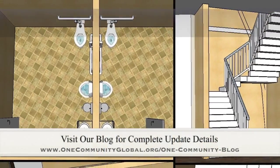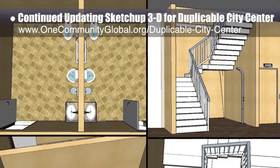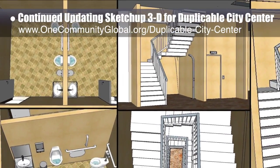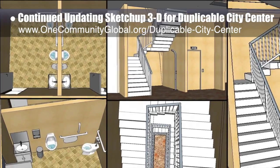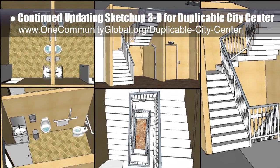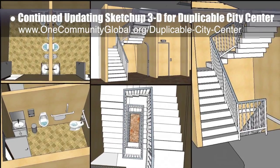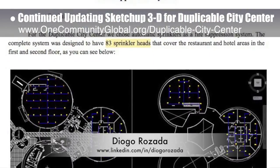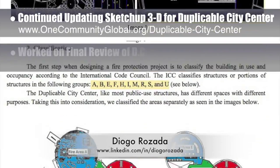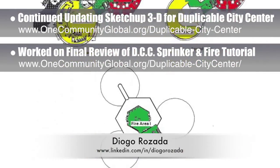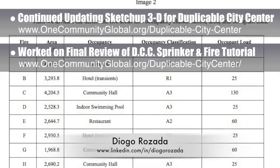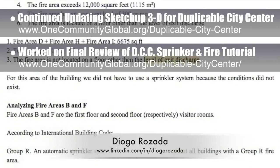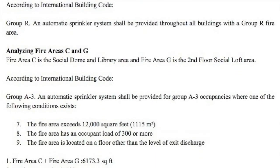This week, the core team continued updating the SketchUp 3D for the duplicable city center. We worked on the bathrooms next to the elevator, redid the stairs and rails for the elevator area, and made corrections to the first and fourth floor structure around the stairs area. We're now 50% complete with the total 3D update. We also worked with Jogo Rosada, a civil engineering student specializing in hydraulics, to complete a final review of edits to the duplicable city center sprinkler and emergency fire system designs and tutorial, being finalized in preparation for adding it to the website.